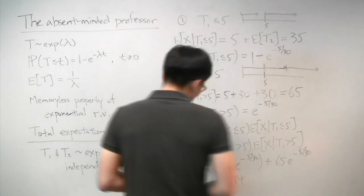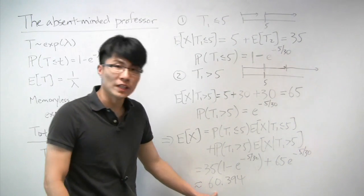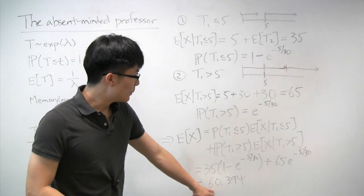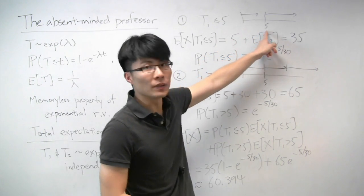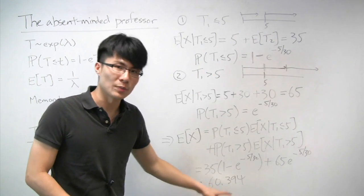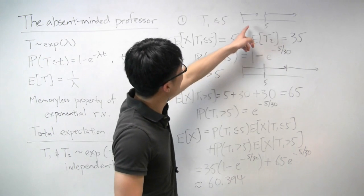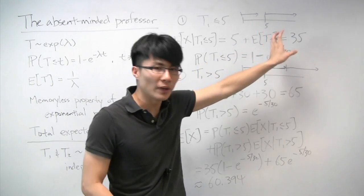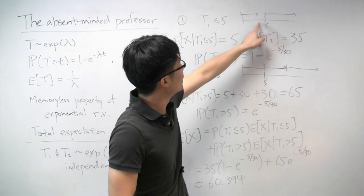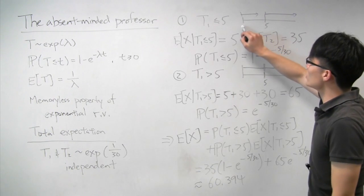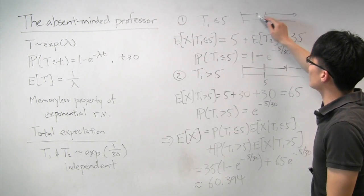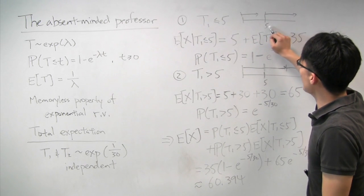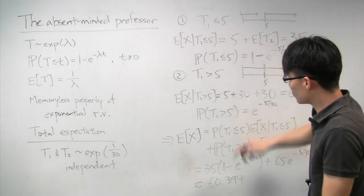So what have we found? Our original guess was that two meetings back to back would take 60 minutes on average. It turns out that because of the 5-minute offset, it actually takes a little longer than 60 minutes. The 5 minutes sometimes adds an extra buffer — if both students had arrived on time, the second student could have picked up immediately and both appointments would have ended sooner. But because the second student didn't arrive until 5 minutes, there was some idle time that was wasted, which accounts for the slight extra time.